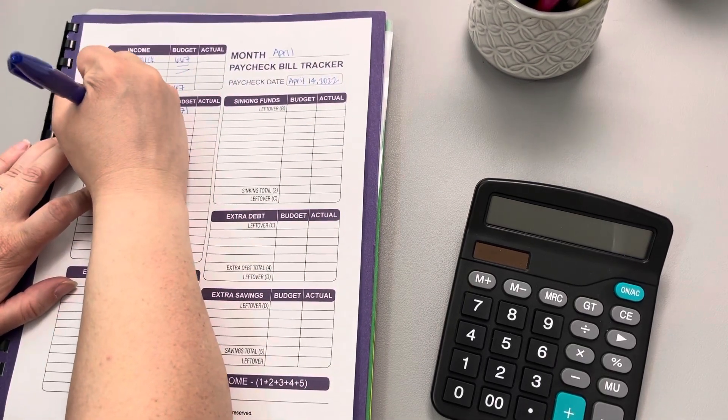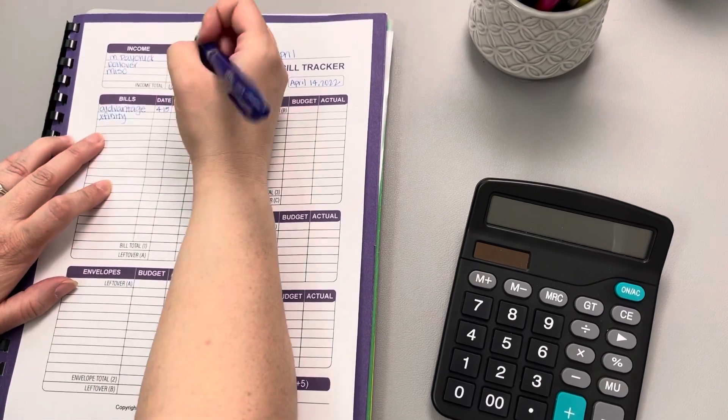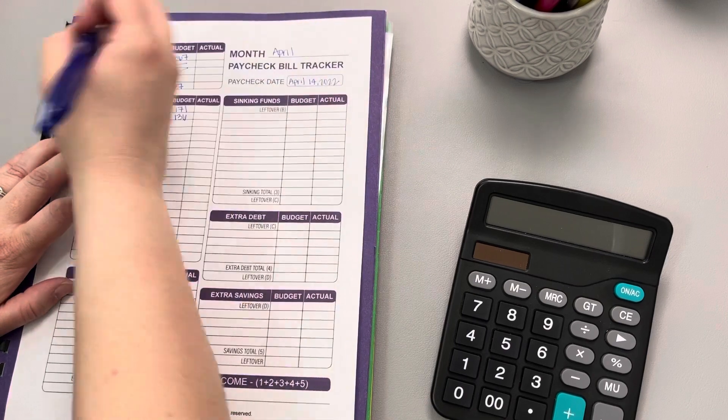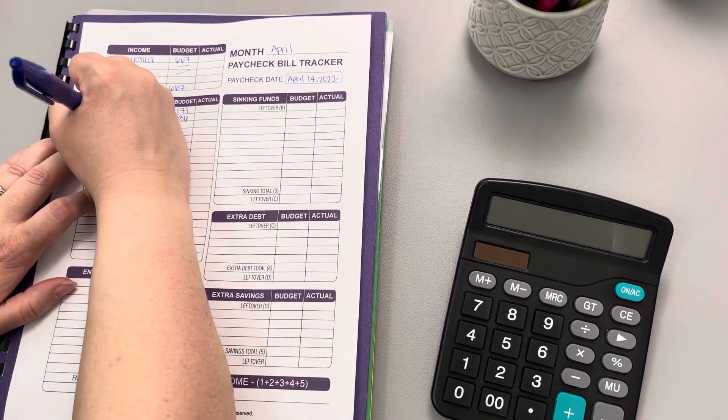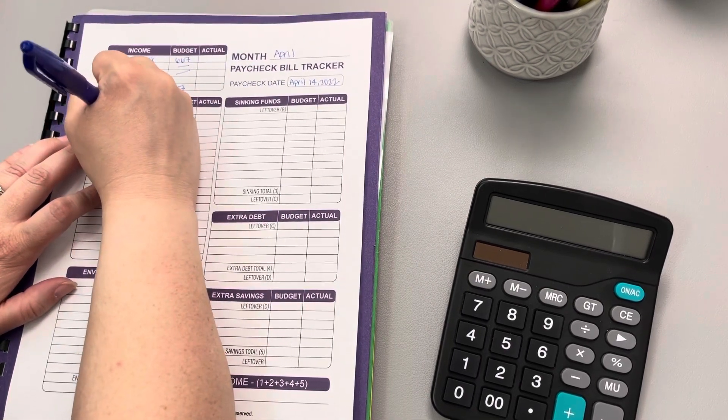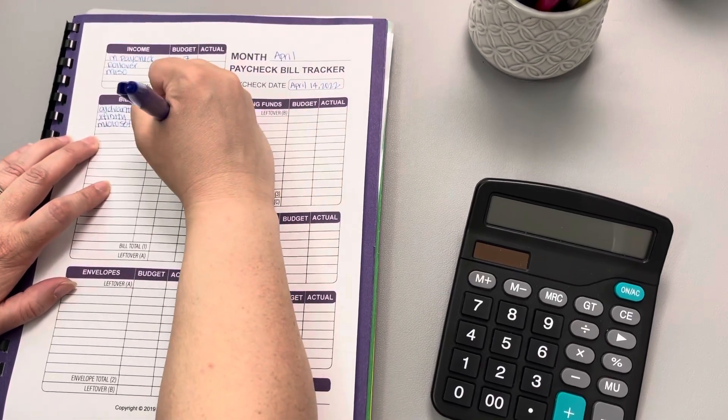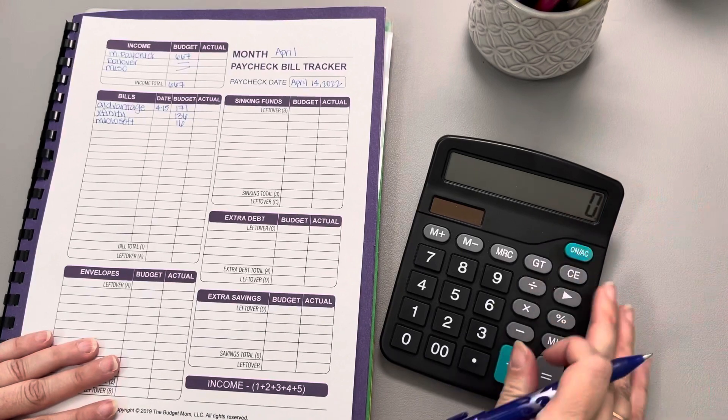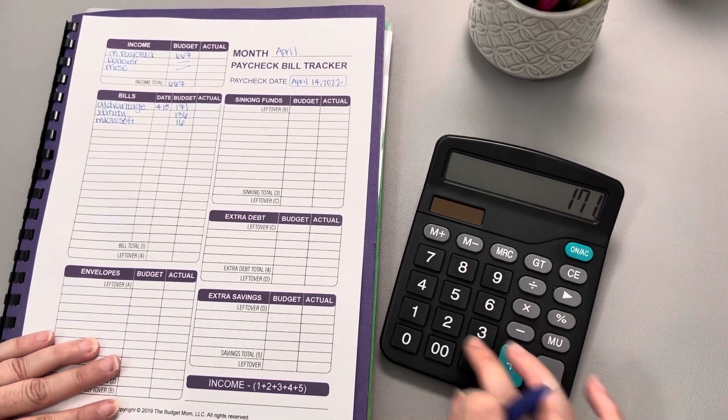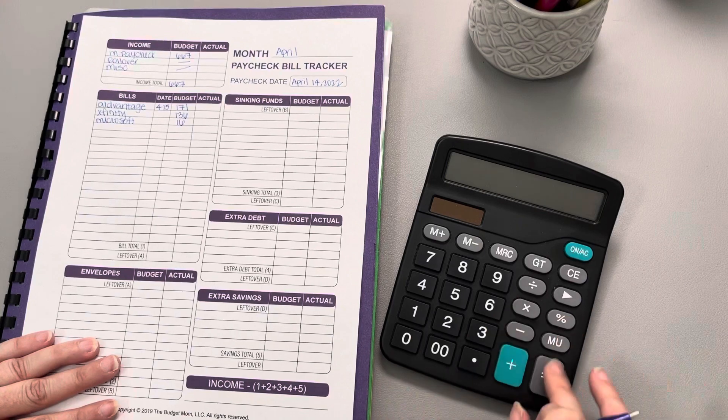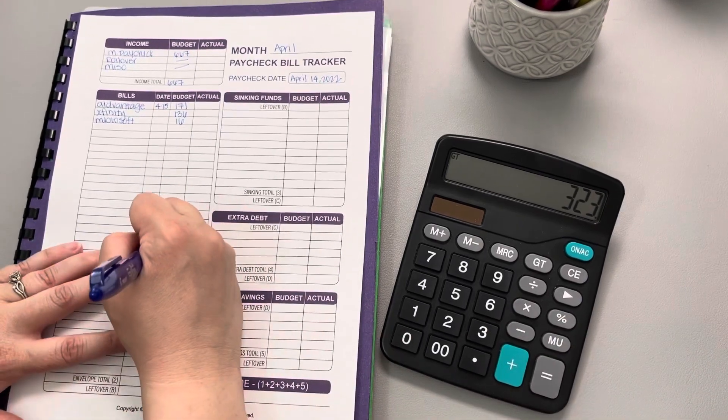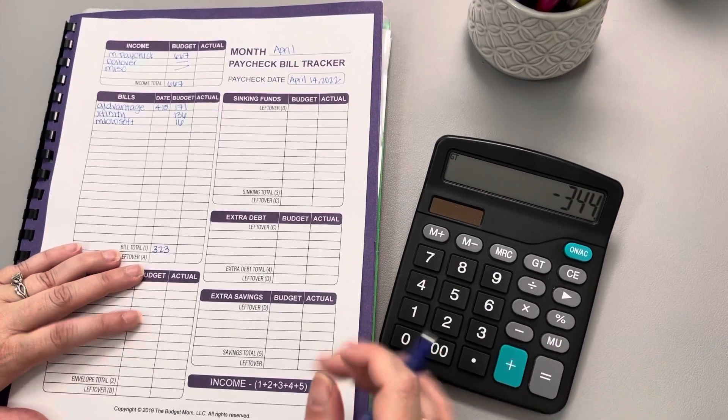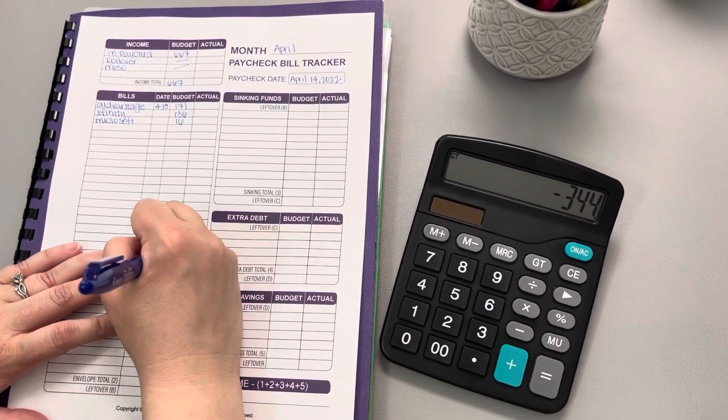Xfinity comes out this week and we do have that adjusted rate of $136. And then Microsoft comes out, and that's $16. So let's go ahead and add those values together. And that equals $323. When we take that from the $667, we are left with $344.